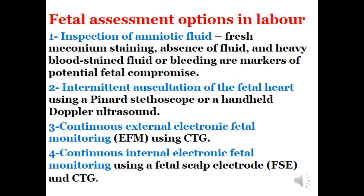Fetal assessment options in labor. Option 1: Inspection of amniotic fluid — fresh meconium staining, absence of fluid, heavy blood-stained fluid, or bleeding are all markers of potential fetal compromise.